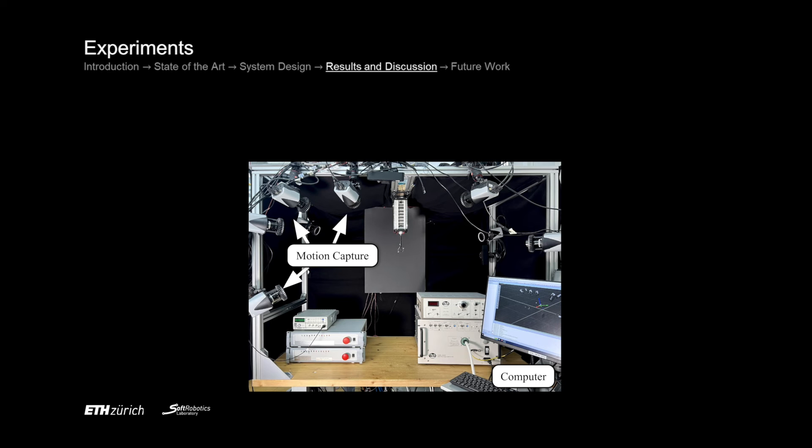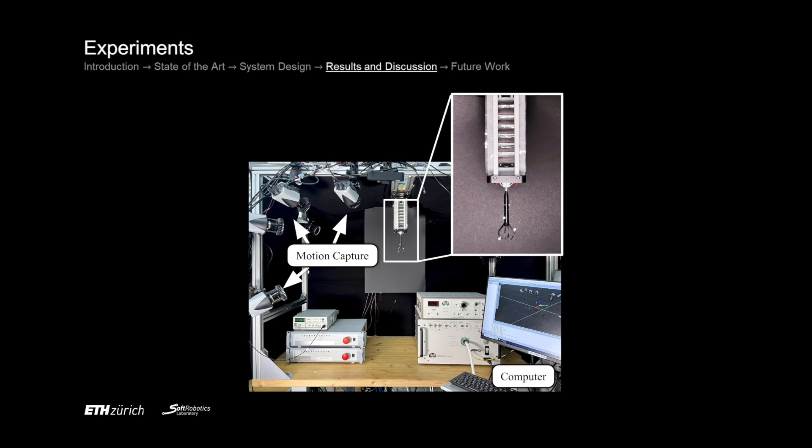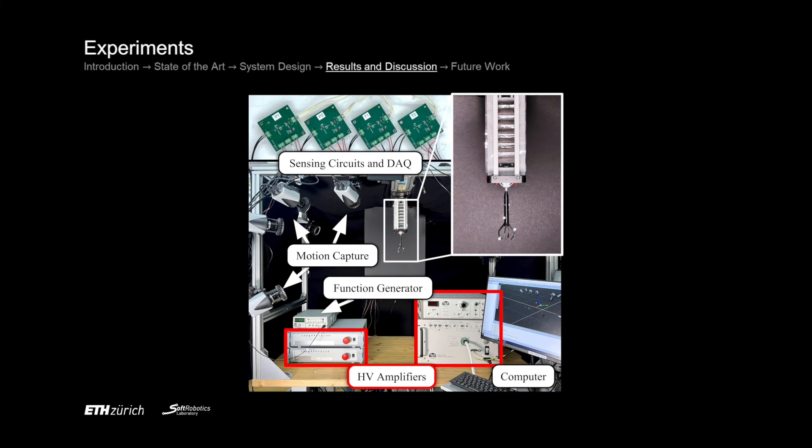We validated our approach using experiments with an attached gripper. As you can see in the experimental setup, we used four high voltage amplifiers to control the HASELs. The function generator created a low voltage sensing signal at 20 kilohertz and our sensing circuits measured the voltage drop over the sensing electrodes which we used as feedback signal.